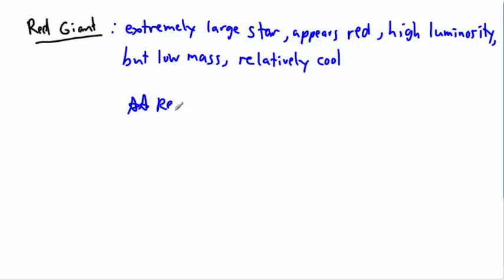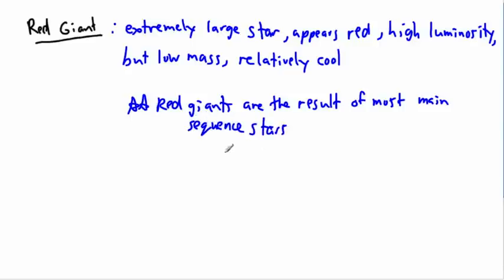So red giants are the result of most main sequence stars. In other words, most main sequence stars will pass through a red giant phase. In other words, so they pass through this phase. Now, this is not the end, but a lot of stars, at least, they pass through this phase. So the result of most main sequence stars, they actually reach this phase, this red giant phase.